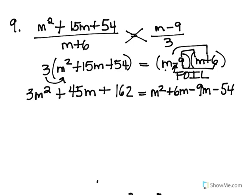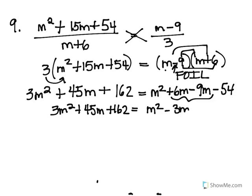Now I'm going to try to get like terms together. And so I'm going to just work on the right side right now. 3m squared plus 45m plus 162 equals m squared. I'm combining the 6m and the negative 9m, so that becomes minus 3m and then minus 54.